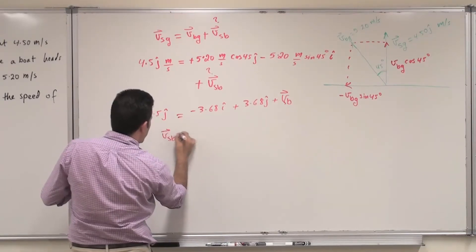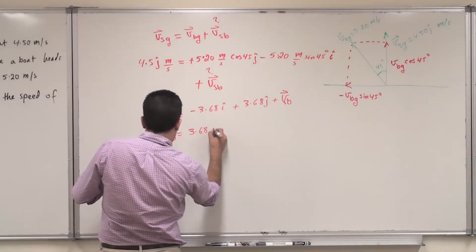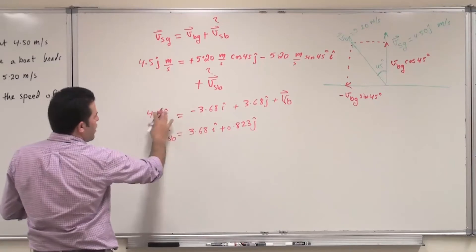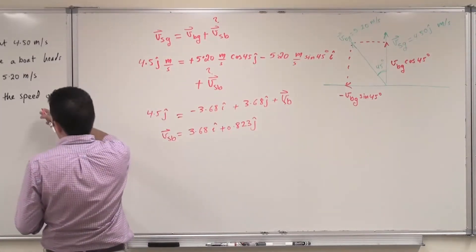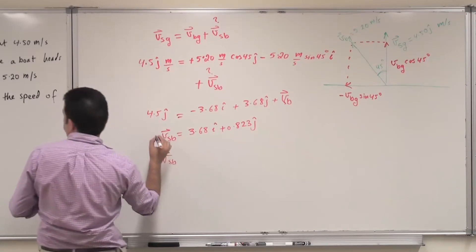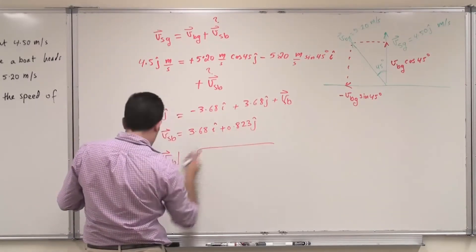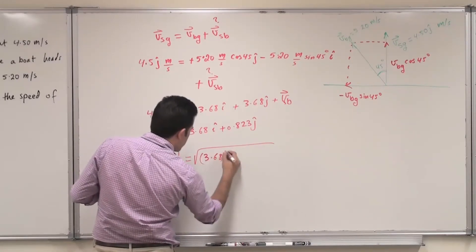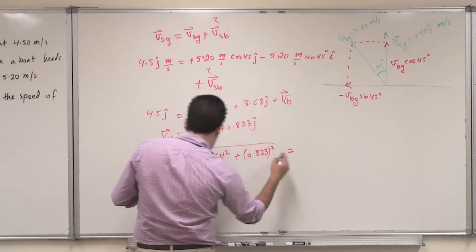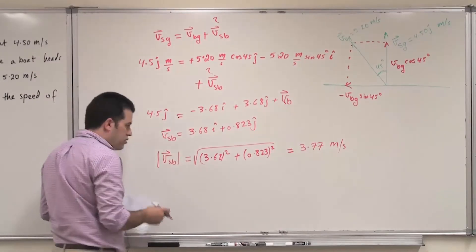The velocity of the ship relative to the boat equals 3.68 i-hat plus 0.823 j-hat. Since the question asks for speed, we find the magnitude: the square root of 3.68 squared plus 0.823 squared, which yields 3.77 meters per second. This is the speed of the ship relative to the boat.